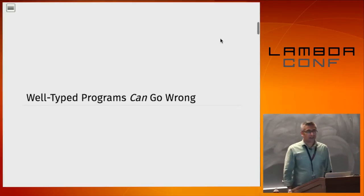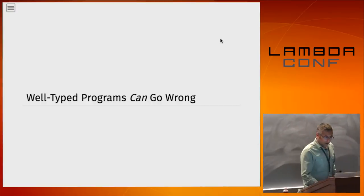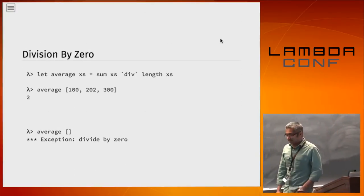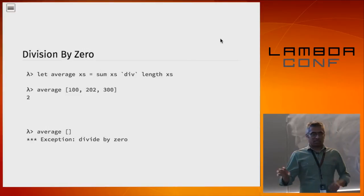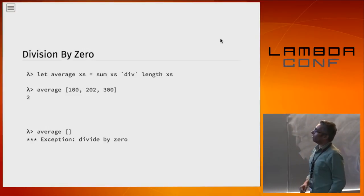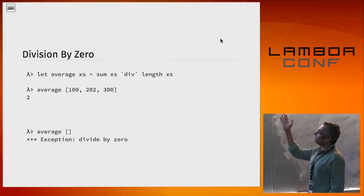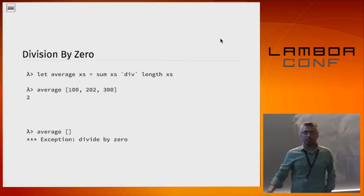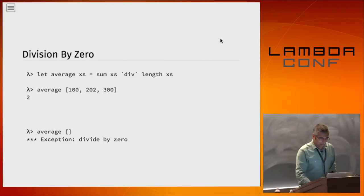So here's the general plan. As we all know, well-typed programs can go very, very wrong. Here are some of the favorite examples. The dinkiest example: if I write a little average function and try to divide by the length of a list, it's all very well if the list is not empty, but if the list is empty, I get a nasty runtime error.